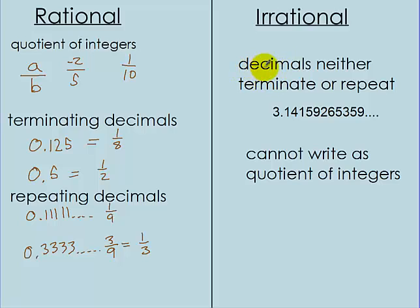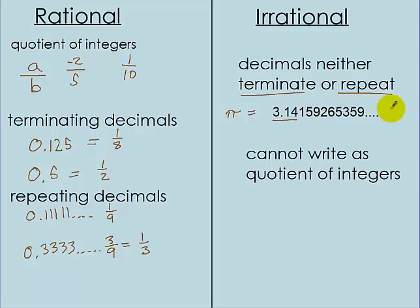Irrational numbers are decimals that neither terminate nor repeat — they don't stop and they don't repeat a pattern. One example is pi, which we usually round to 3.14, but it actually keeps going on forever without repeating. Another key property of irrationals is you cannot write them as a quotient of integers — you can't write pi as A over B using two integers.